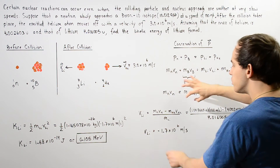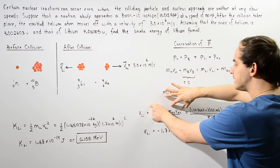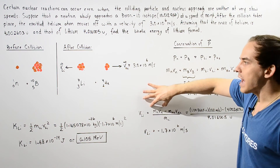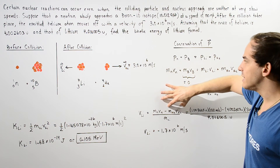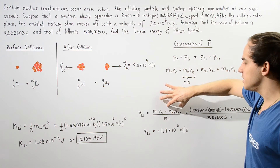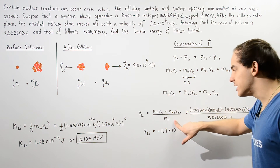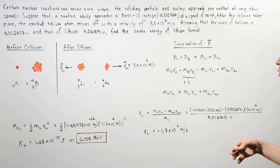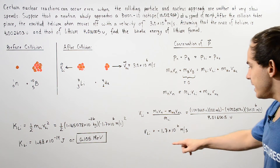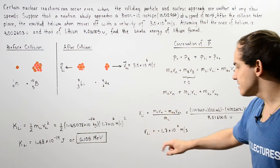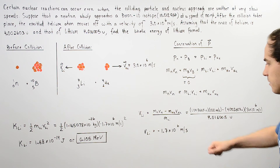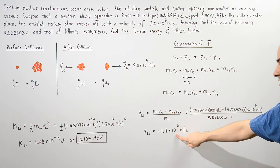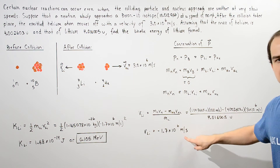The momentum of the neutron minus the momentum of the helium, divided by the mass of the lithium, gives us the velocity of lithium. The velocity of the lithium is equal to negative 1.7 times 10 to the 6 meters per second.